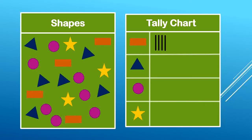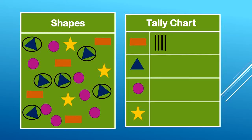Now let's count our blue triangles. One, two, three, four, five, six. That means we need six lines, one for each of the triangles. Let's come over to our tally chart and fill it in: one, two, three, four. But on the fifth tally we need to cross over the four — that way we keep it in sets of five and it's very easy to count at the end. But we don't just need five, we need six. There we go, six tallies for the six triangles.